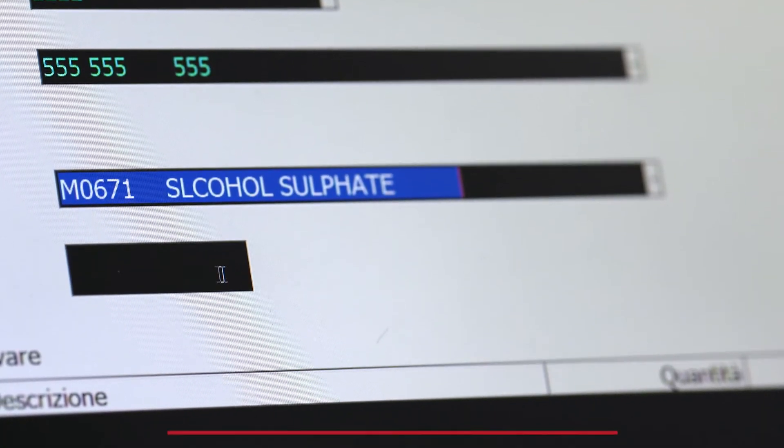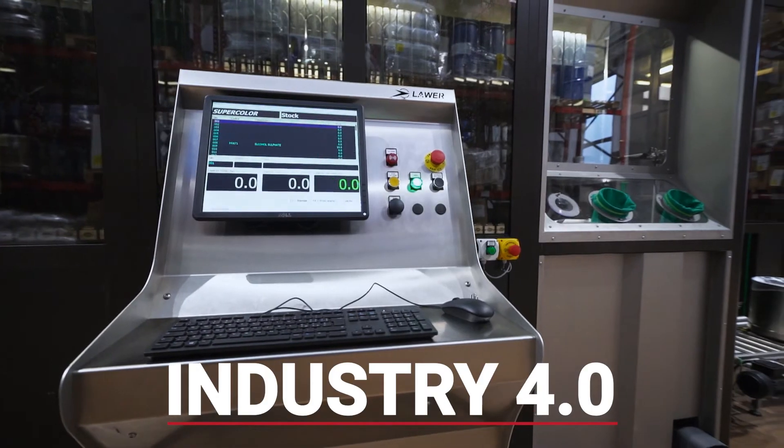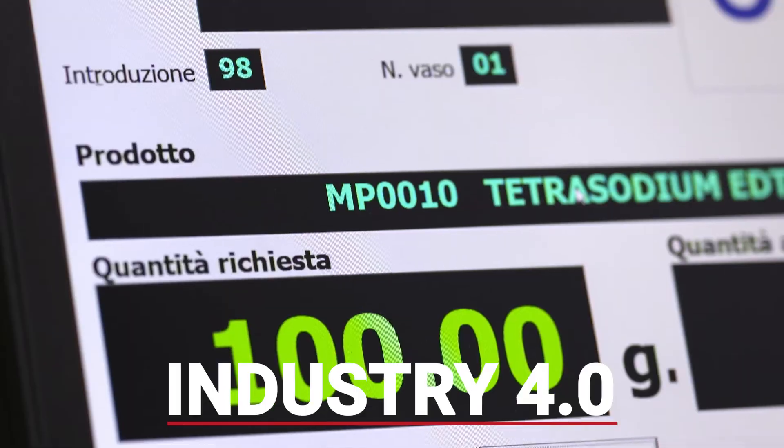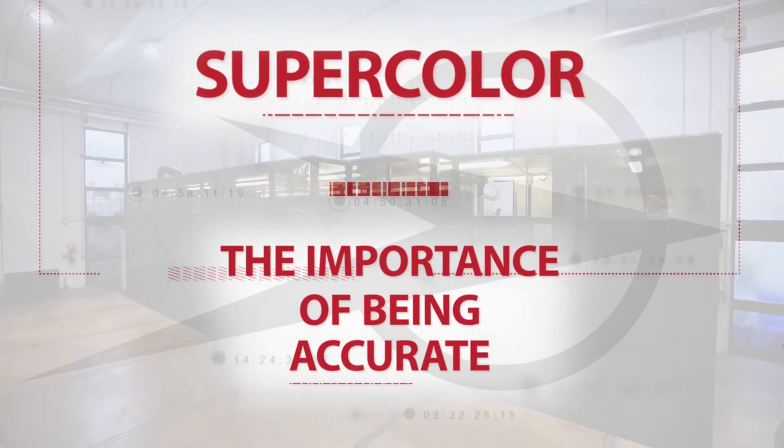SuperColor ID.Tag software guarantees effective cross-checks and traceability of all machine operations. It generates sophisticated reports and allows integration with external systems within the concept of Industry 4.0. SuperColor. The importance of being accurate.